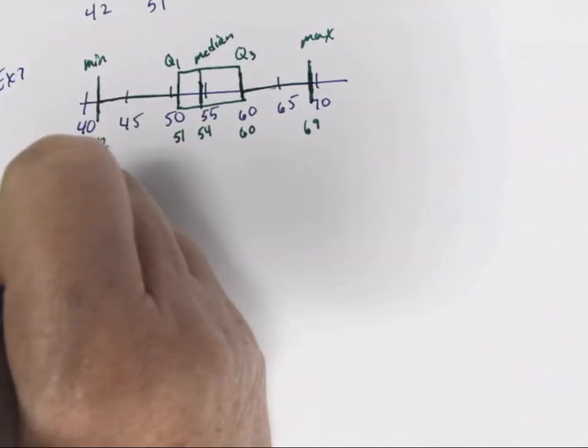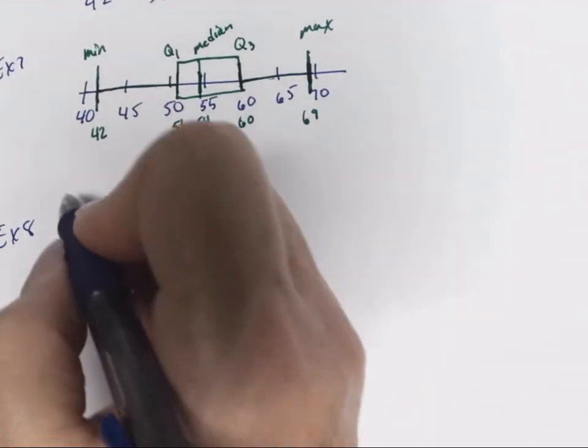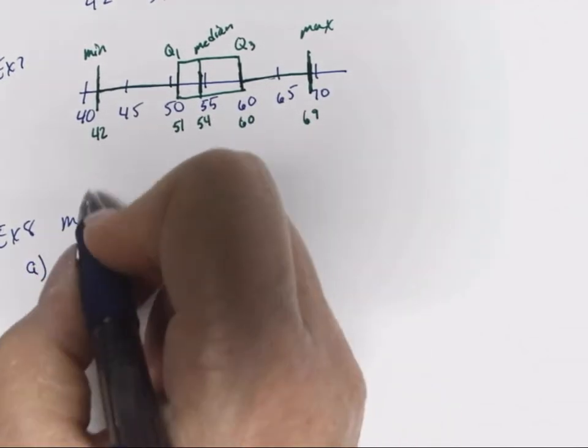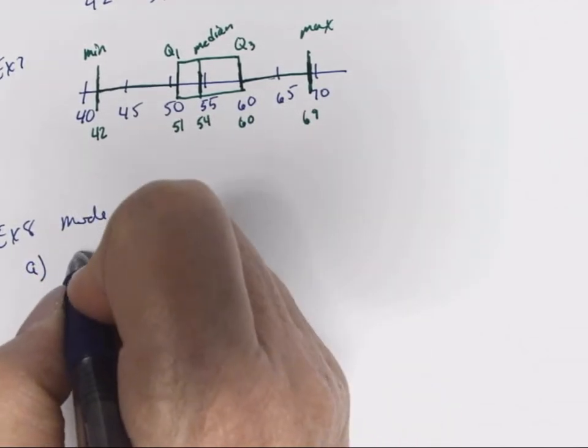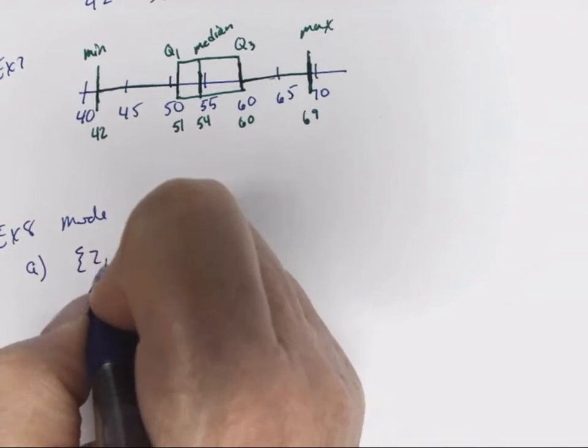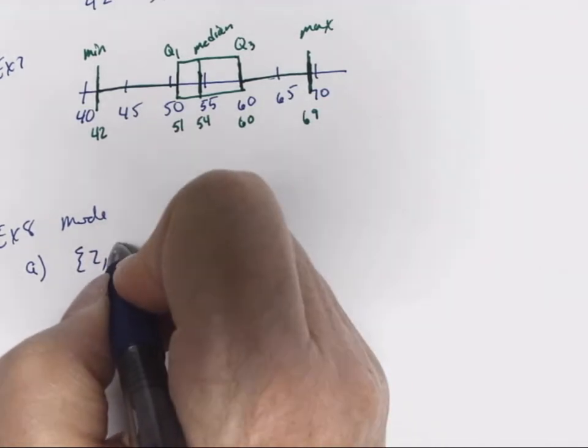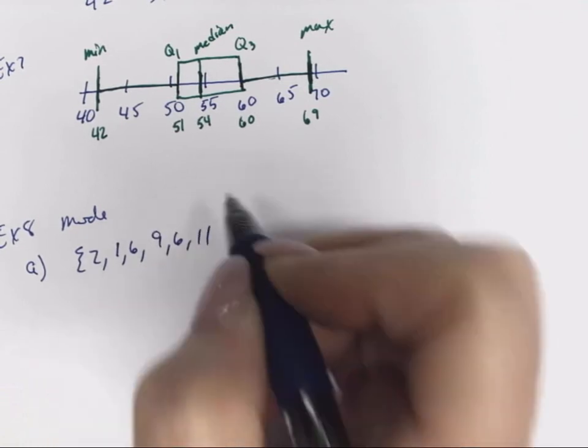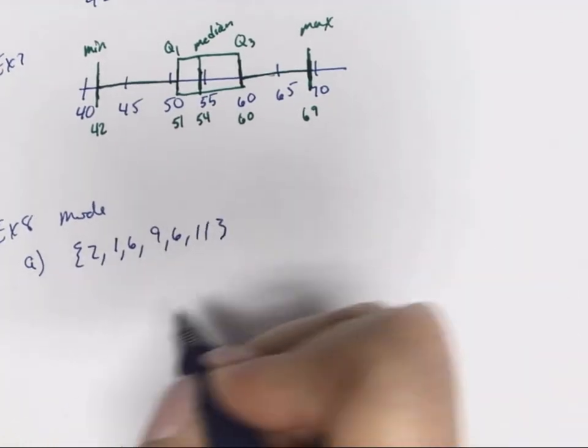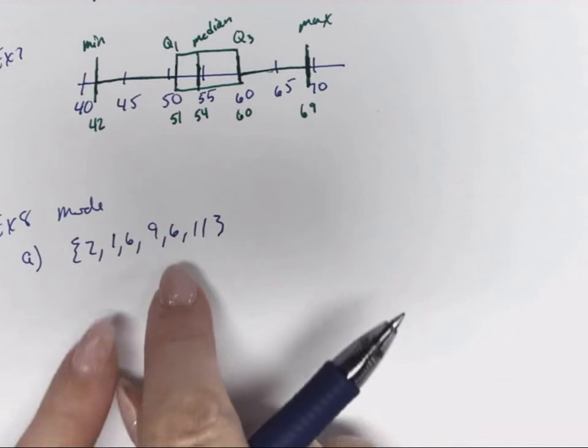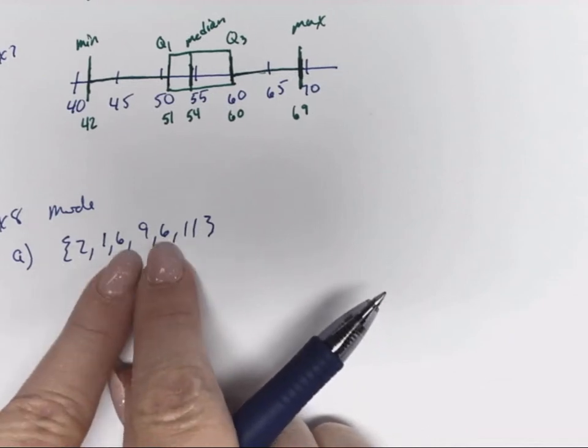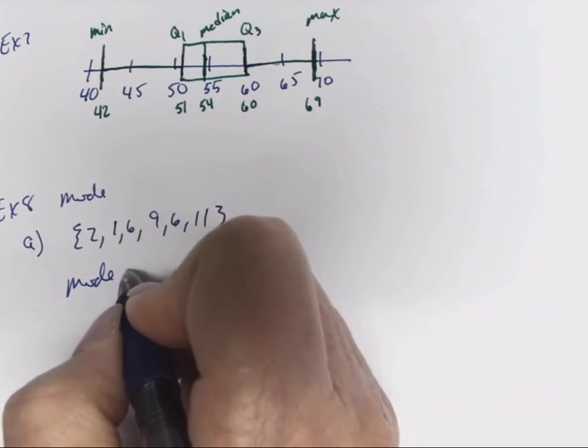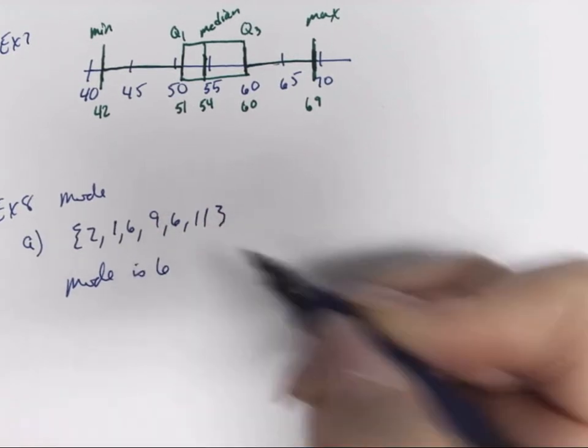We're on to example 8. We're going to find the mode. If we're given a set of data that is 2, 1, 6, 9, 6, and 11, our mode is going to be the one that occurs most. The only one that repeats is number 6, so our mode is 6.